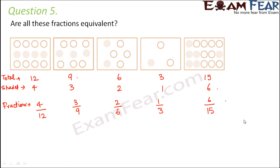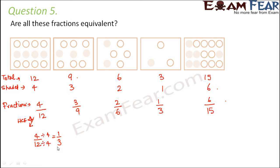Now look at each of these — do you think that they are equivalent? To find out, let us convert each of them into their simplest form. For 4 and 12, the highest common factor (HCF) is 4. So we divide the numerator and denominator by 4 and we get 1 by 3.